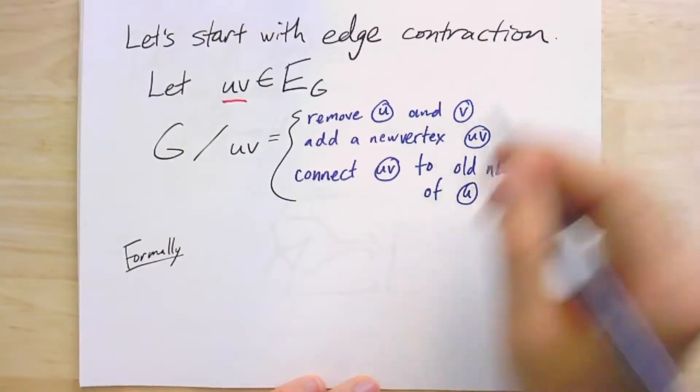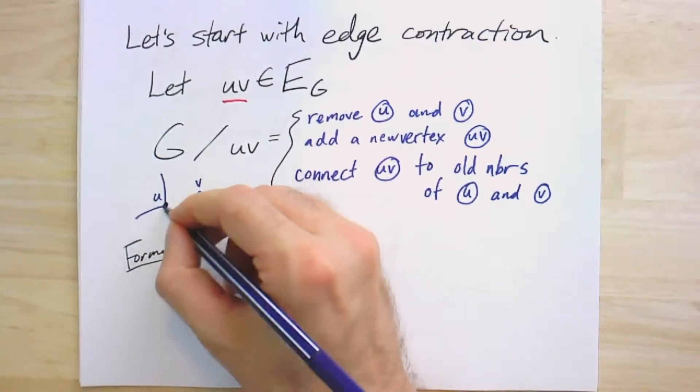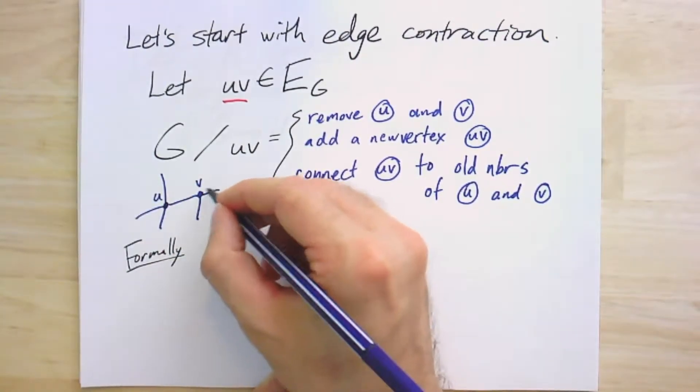So I think intuitively, hopefully this makes sense. In pictures, here was U, here was V. They had some neighbors. There was an edge between them.